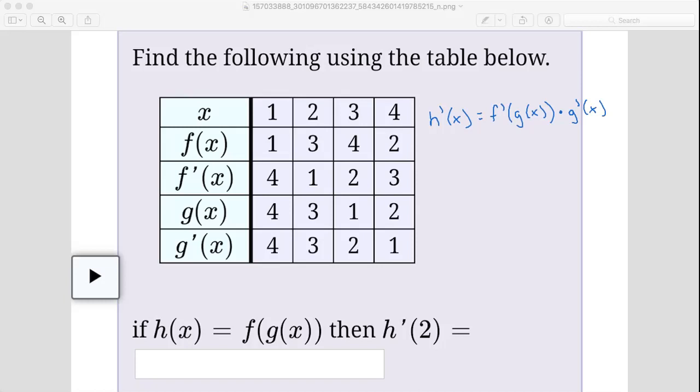So this is our chain rule formula and since we're trying to find h prime of 2, h prime of 2 would just be to substitute a 2 for every x. So that would be f prime of g of 2 times g prime of 2.